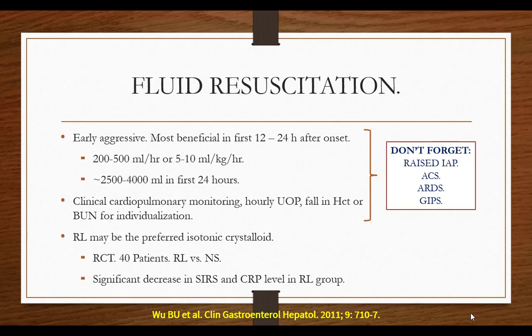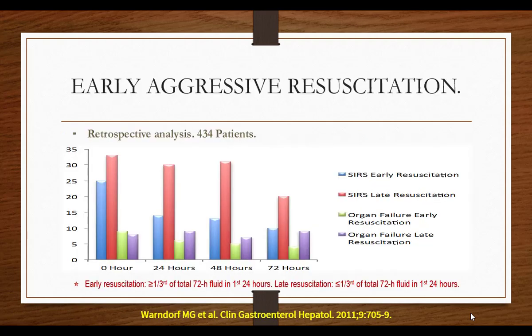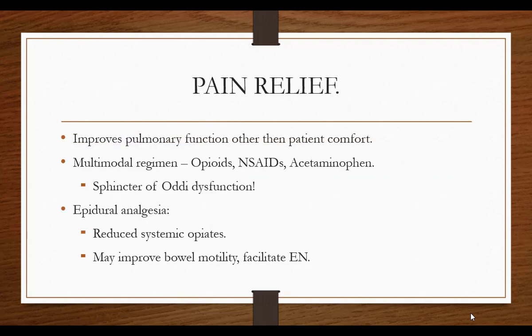Pain relief is important not only for patient comfort but also for improving pulmonary function. Morphine can produce sphincter of Oddi problems, so fentanyl is relatively better. Sometimes a combination of opioid, NSAID, and acetaminophen is needed. Epidural analgesia for pancreatitis pain relief is an option that reduces systemic opioids, may improve bowel motility, and facilitates enteral nutrition.